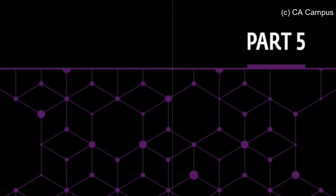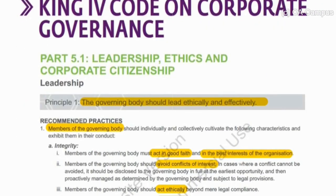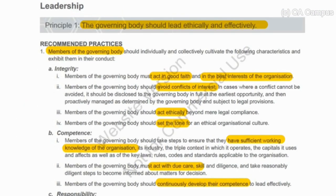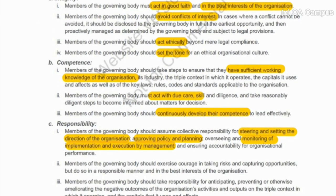We're in Part Five of the King Code. The first principle is that the governing body should lead ethically — remember this is a level three; the other two are only level twos, so our focus should be here. Members of the governing body must act in good faith in the best interest, avoid conflict, set the tone, and act ethically. They must have sufficient working knowledge — that's also in the Companies Act — and act with due care, also in the Companies Act.